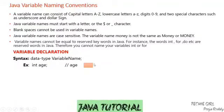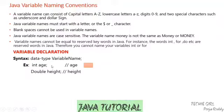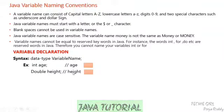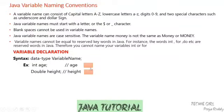Let's see one more declaration example: 'double height'. Double is a data type which can store decimal numeric values, because height might be 5.0 or 5.1. Here I'm just declaring it but not initializing it, so I'm only giving a name to the memory location without storing any value yet.